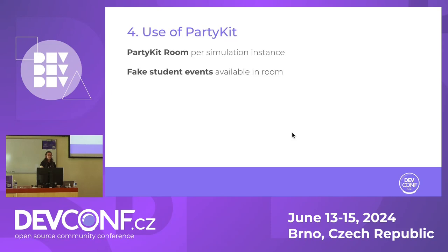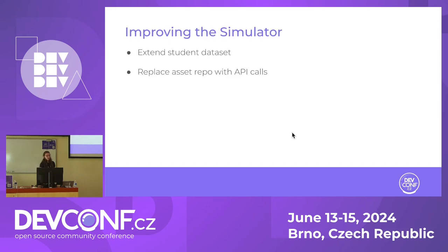For our use case, we used PartyKit to manage different instances of the simulation. Every time a new simulation is started, a PartyKit room is created and assigned to that instance, so multiple can run simultaneously. If you look at the logs of the PartyKit room, you can see all the different student events — what the fake students were doing. To improve the simulator further, we want to extend the dataset to make it more realistic and replace the asset repo with API calls to a model so that pictures and prompts can be dynamically created.